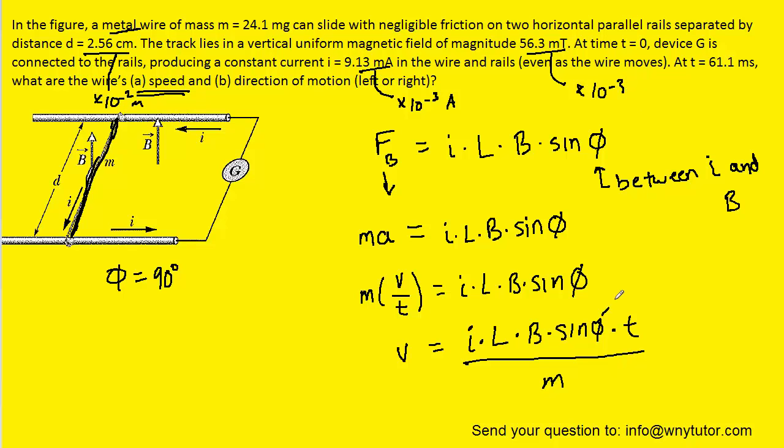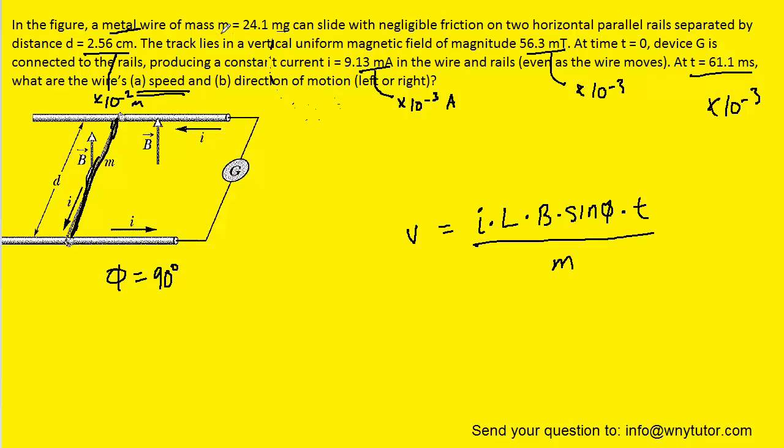The angle as noted was 90 degrees. The time is given to us in milliseconds, so we'll multiply that by 10 to the minus 3. And then the mass is given in a non-standard unit, so to convert that into kilograms, we'll have to multiply that by 10 to the minus 6. With all of those conversions, let's plug into the equation for the speed.